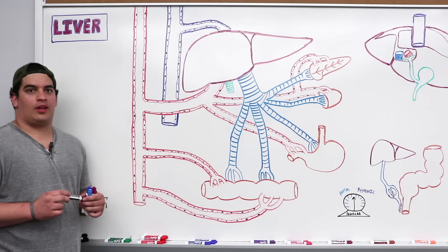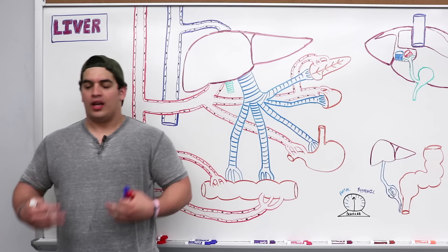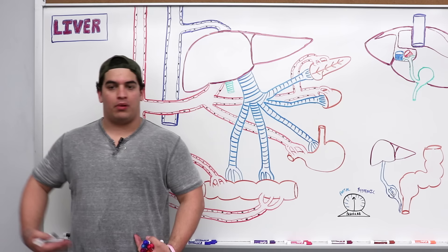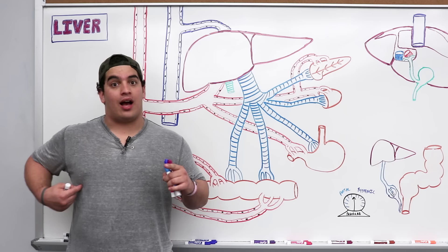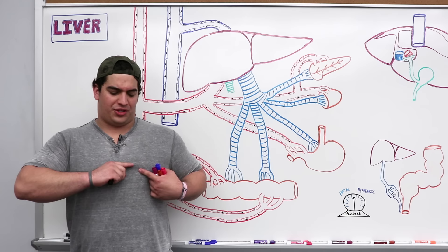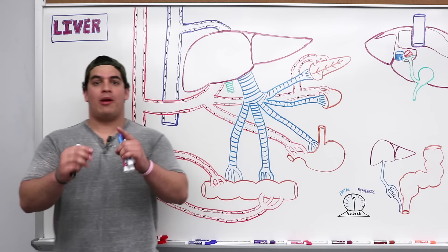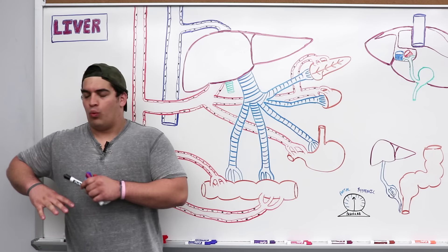First, when we talk about the liver, we should have a good understanding of where we can find it anatomically. Using a nine-quadrant system — with right and left vertical planes, and superior and inferior transverse planes — it separates into nine quadrants. The liver occupies three of those nine quadrants: the right hypochondriac, part of the epigastric region, and the left lobe just barely peeks into the left hypochondriac region.